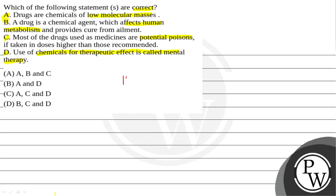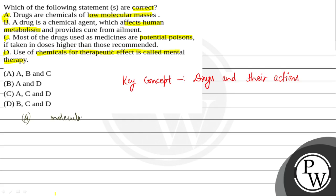This question is based on the key concept of drugs and their actions. Statement A हमको दिया हुआ है: drugs are chemicals of low molecular masses. तो अगर drugs का हम molecular mass देखें, यह होता है about 100 to 500 U. यह बहुत कम है, तो इनका जो molecular mass है वो low होता है.